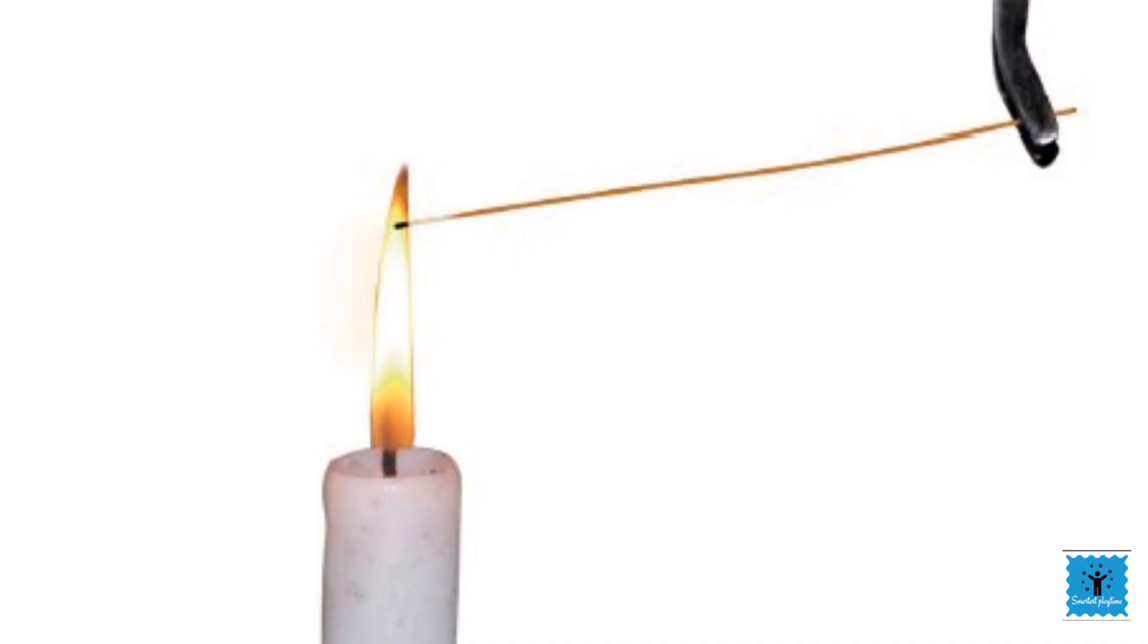Hold a thin long copper wire just inside the non-luminous zone of flame, which is the outermost zone of the flame, for about 30 seconds. You will notice that the portion of the copper wire just outside the flame gets red hot. It indicates that the non-luminous zone of the flame has a high temperature and it is the hottest part of the flame.